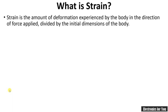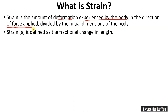Let's see what strain is. Strain is the amount of deformation experienced by a body in the direction of force applied, divided by the initial dimensions of the body. Strain is denoted by epsilon and it is defined as the fractional change in length. Therefore, epsilon equals delta L, that is change in length, divided by actual length. This is the formula for strain.